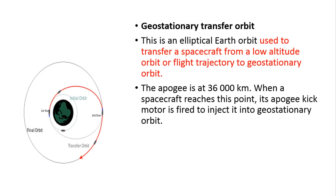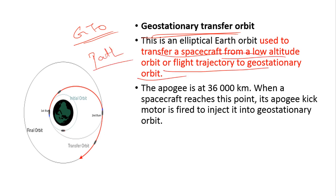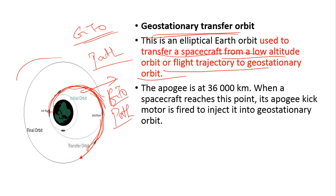The next orbit we will look at is geostationary transfer orbit, that is GTO. In layman terms, GTO is a path which is taken by a spacecraft from a low altitude to reach the geostationary orbit. Imagine you launch a rocket — the rocket will take a curved path to reach the desired orbit. The path taken by the rocket to launch the satellite into the desired orbit is called geostationary transfer orbit. There is an image showing the red line as the geostationary transfer orbit — the path taken by the rocket to place the satellite into geostationary orbit.